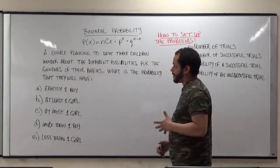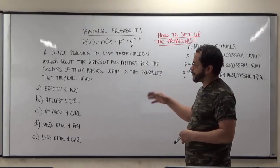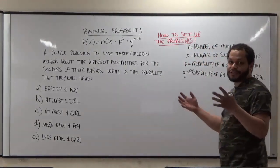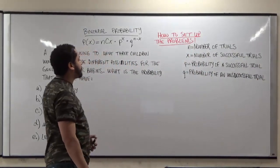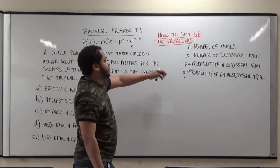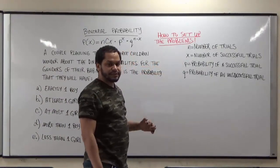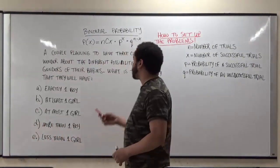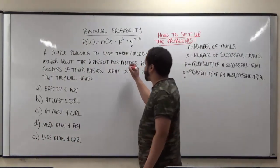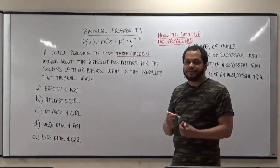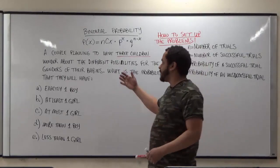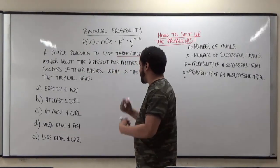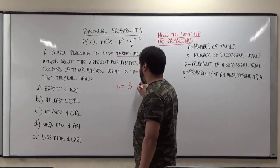Before we can consider this a binomial probability distribution, we have to make sure it meets the four requirements. For the first requirement, the procedure must have a fixed number of trials — we need to know N, X, P, and Q. Here the fixed number of trials is the three children they're planning to have, because each child is a trial. For each probability, P and Q will change, but N remains three.